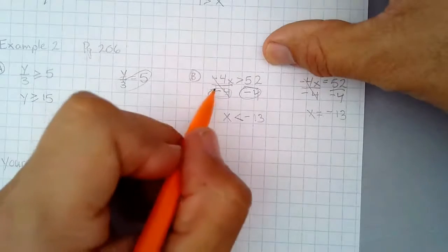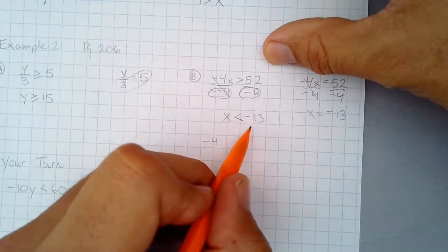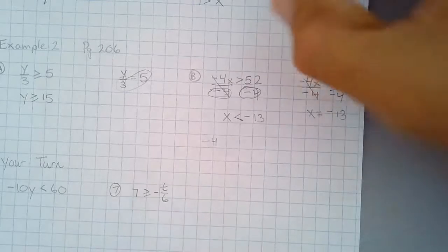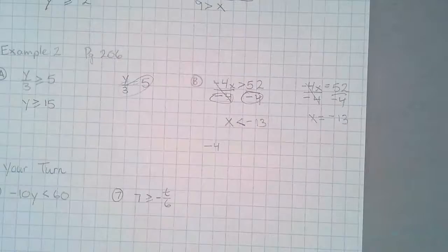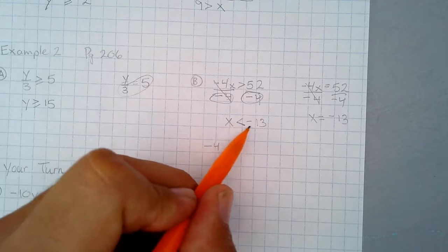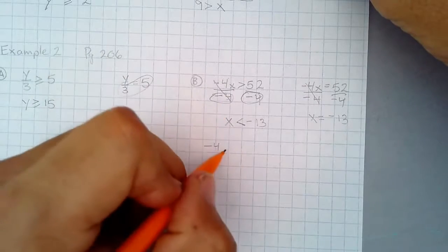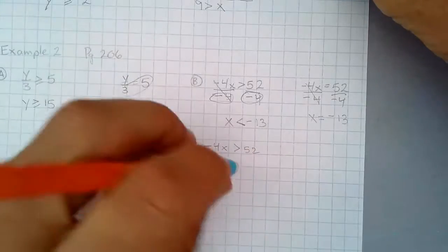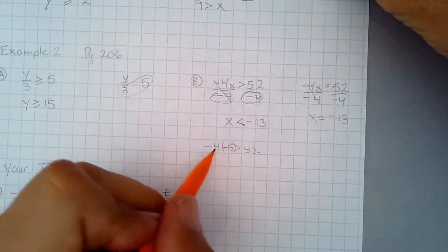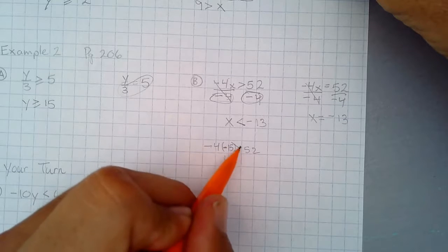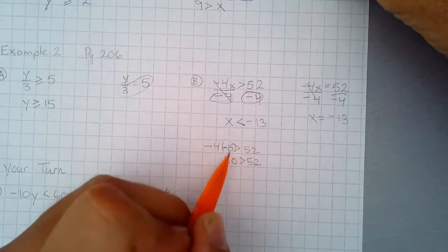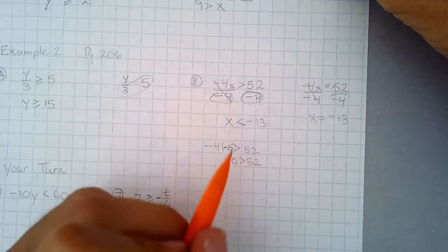Let's put it to the test. A number smaller than negative 13 might be negative 15. So I'll put negative 15 in for x: negative 4 times x has to be greater than 52, and x could be anything smaller than negative 13, such as negative 15. And negative 4 times negative 15 is positive 60, and that is a true statement. The solution I got gave me a true statement when I plugged it back into the original inequality.